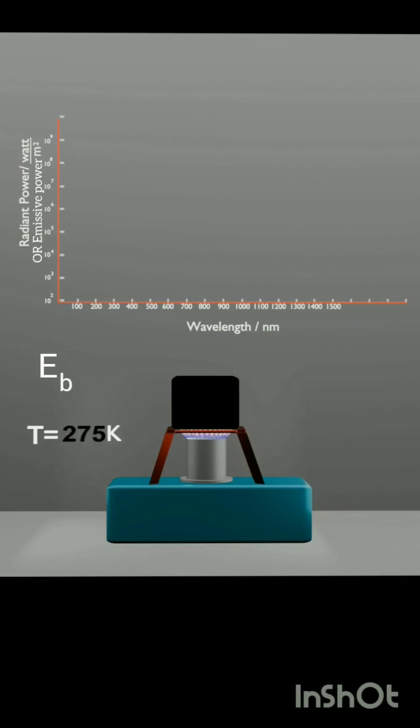According to Stefan's Boltzmann law, the emissive power of a blackbody is directly proportional to the fourth power of absolute temperature.